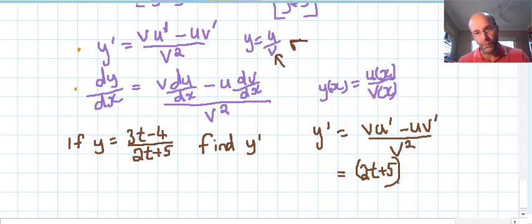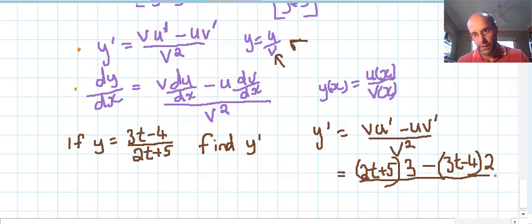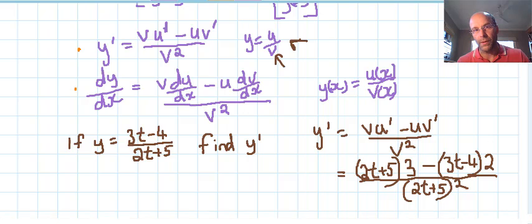Minus, we write the numerator function down, the numerator expression, and v dash is the derivative of the bottom, all over v squared. So that's 2t plus 5 all squared. Okay, we've subbed into the rule.